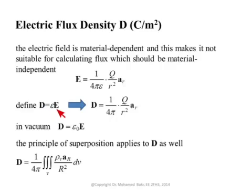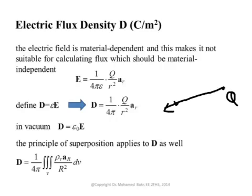D is equal to epsilon times E, so D is a scaled version of E. When you multiply by epsilon, the epsilon cancels with the epsilon in the denominator, and you end up with D equal to Q over 4πR² in the R-hat direction. D is calculated in the same way as E — pointing from the charge to the observation point, inversely proportional to R². The great thing about D is that there is no material dependence.